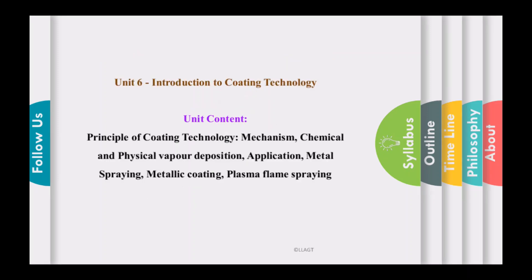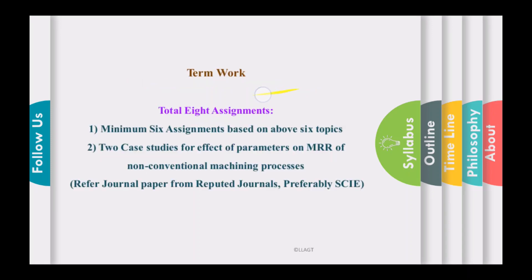Unit number six is an introduction to coating technology, which is a part of surface engineering. In this unit we will learn the principle of coating technology, the mechanism, chemical vapor deposition (CVD) and physical vapor deposition (PVD) processes, applications of coating processes, metal spraying, metallic coating, and plasma flame spraying — that is thermal spraying. This completes the syllabus for this course.